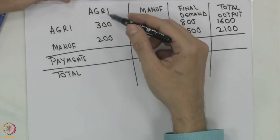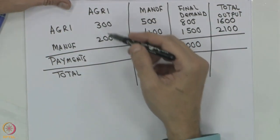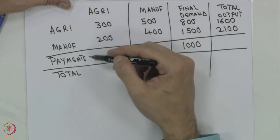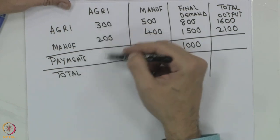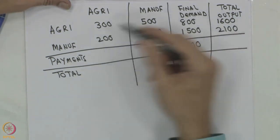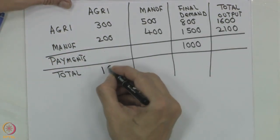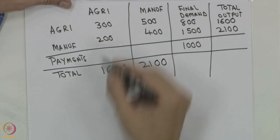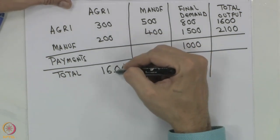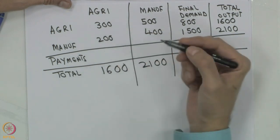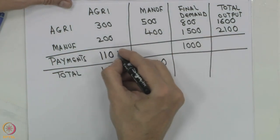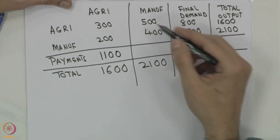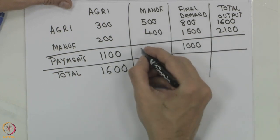Now, when we look at the agriculture column, agriculture is being used for agriculture and these are the transactions. The total payments in terms of wages, profits, and everything must be such that the total output is the same. So this total output here will be 1600 and total output here will be 2100. Subtracting: 1600 minus 500 gives us 1100, and 2100 minus 900 gives us 1200.